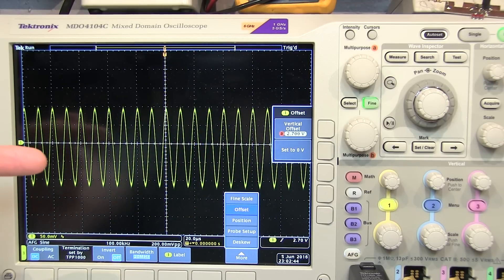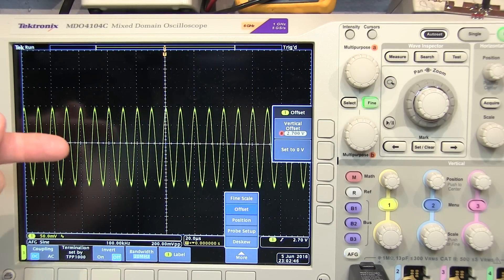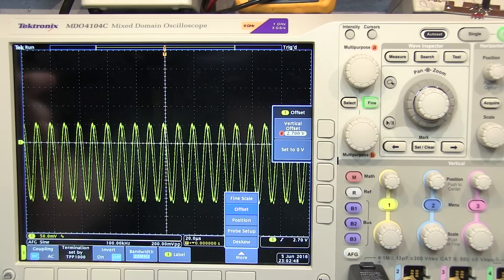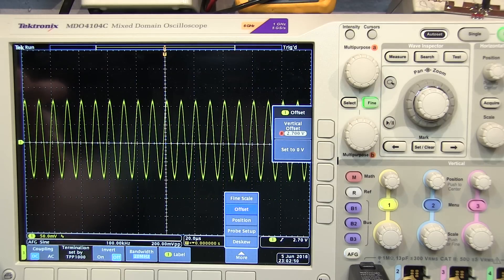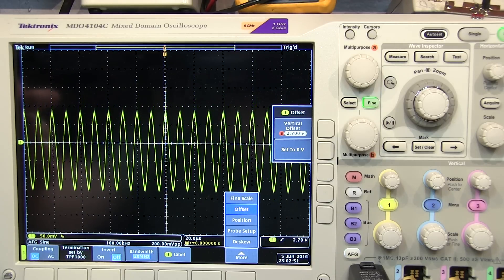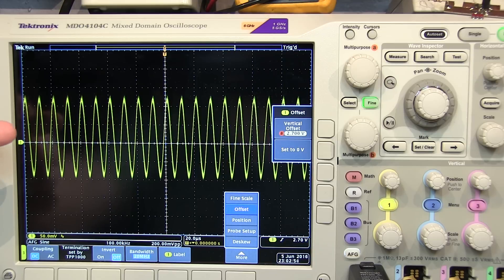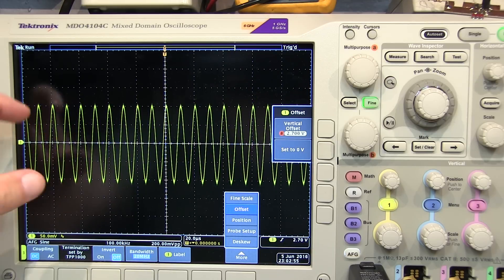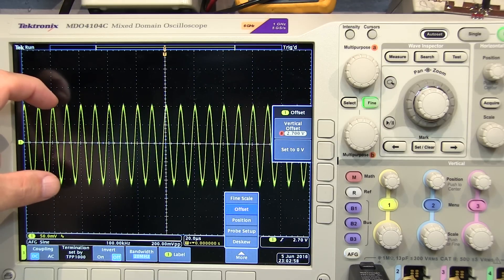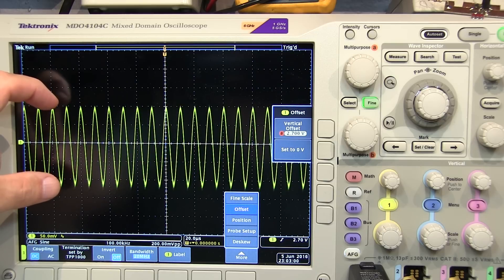So for example, if the DC level of this waveform changed, say like this, I'm just varying the power supply voltage going to my amplifier. I can see the DC level change, as well as my AC content change, if there was any, at the same time.